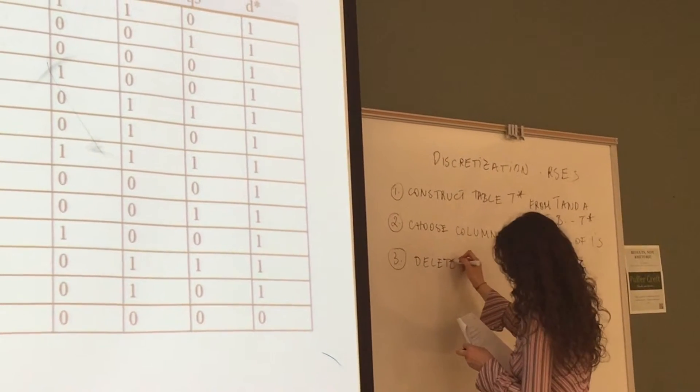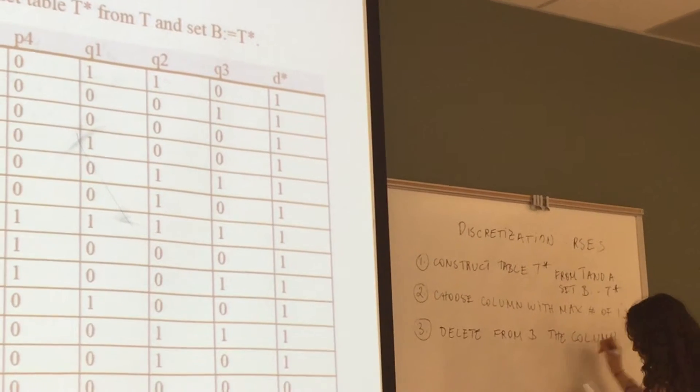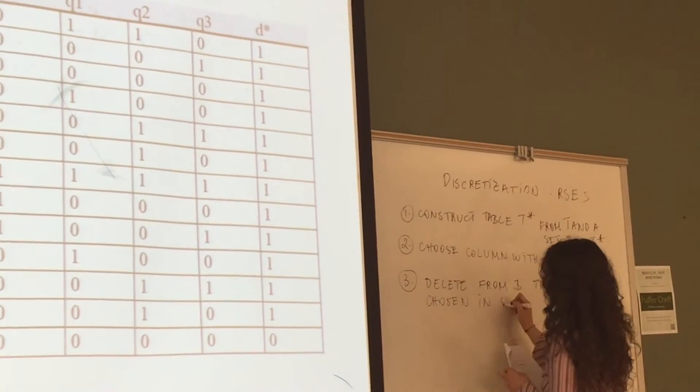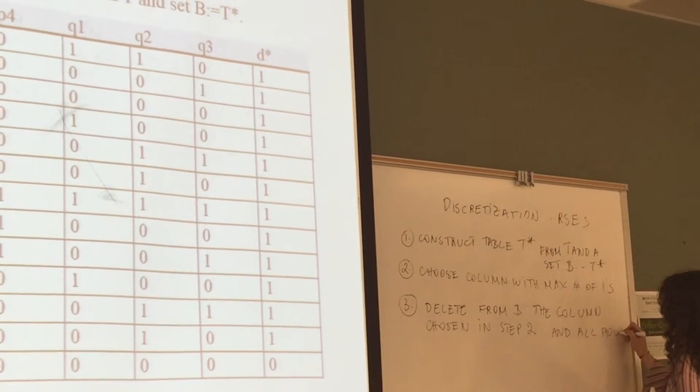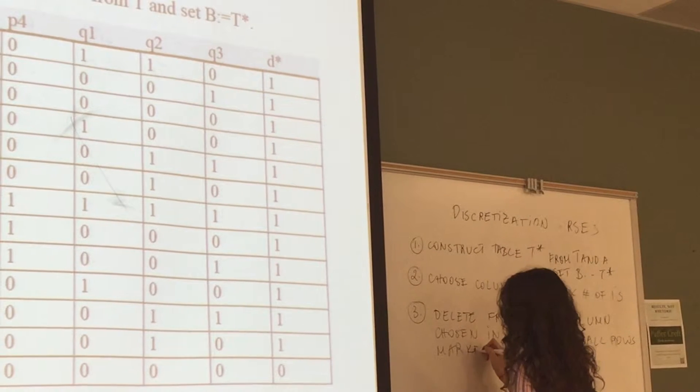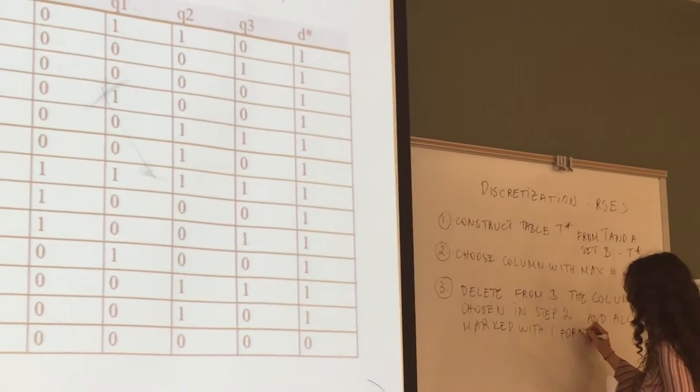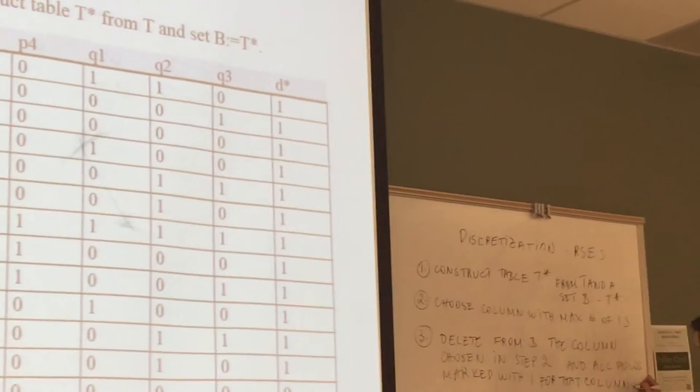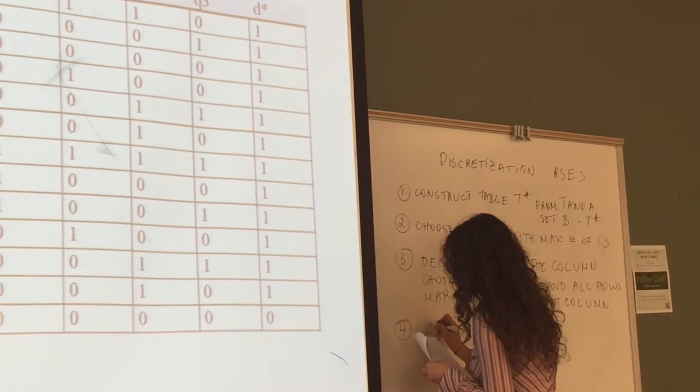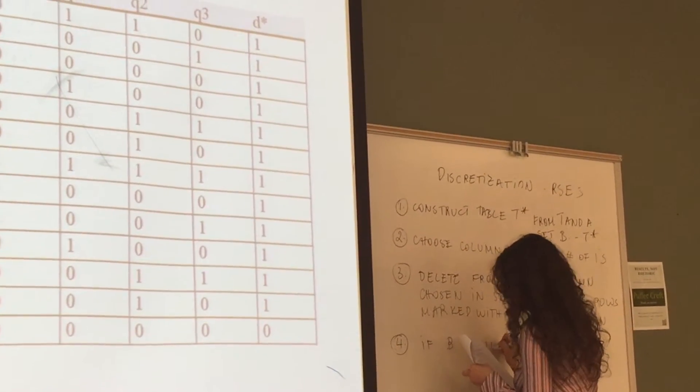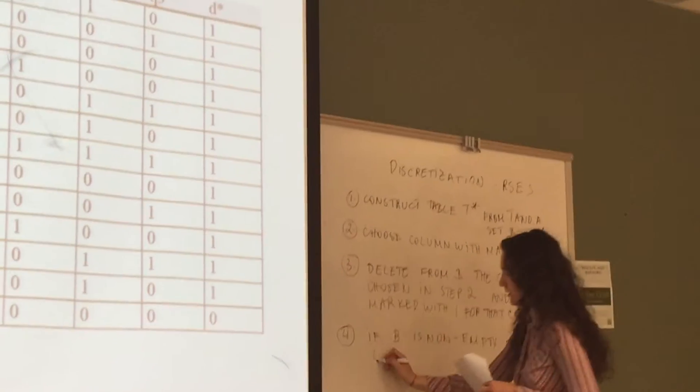Next, it will delete from the table the column chosen in the previous step, and all rows marked with 1 for that column. Next, leave the table. If the table is not empty, go to step 2 and else stop.